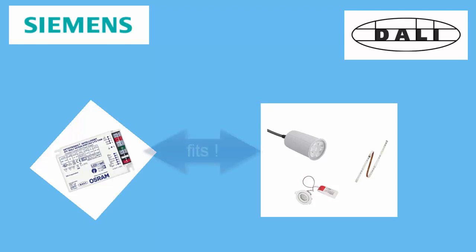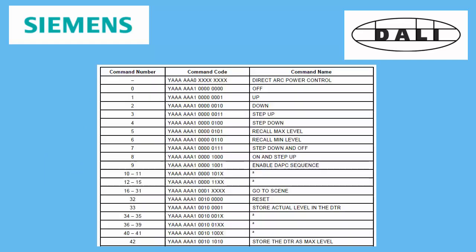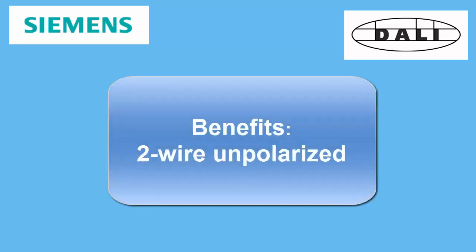The main benefit of DALI is that each lamp has the best possible electronic ballast to operate it, because normally manufacturers have developed both to suit each other in the best way. The control of dimming values is performed by a standardized protocol. Another benefit — mainly for contractors who have to install the wires — is that DALI uses an unpolarized two-wire communication line, which can be wired together with the mains.